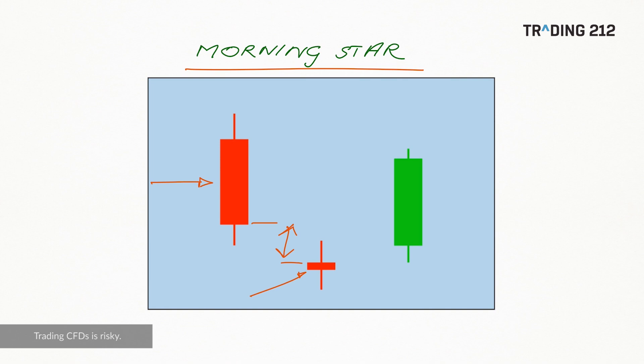And the final candle is a green candle whose body penetrates back up deep into the body of the first red candle. Now the color of this middle candle, the star, is unimportant. It can be either green or red. It doesn't matter.